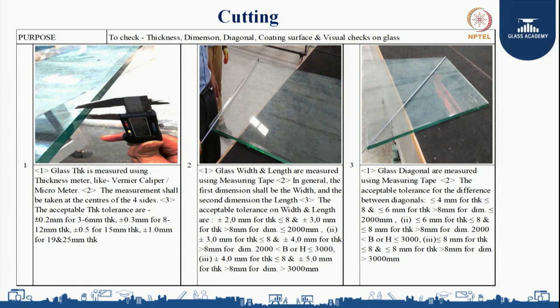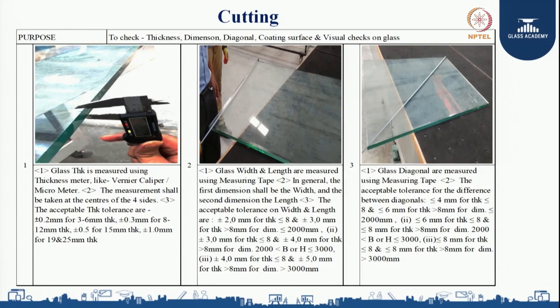Let us understand each in detail. For glass thickness, based on the customer enquiry, we measure with vernier caliper or micrometer. The measurement shall be taken at the center of the 4 sides. Acceptable thickness tolerances are plus or minus 0.2 for 3 to 6 mm thick, plus or minus 0.3 for 8 to 12 mm thick, plus or minus 0.5 for 15 mm thick, and plus or minus 1 for 19 to 25 mm thickness.